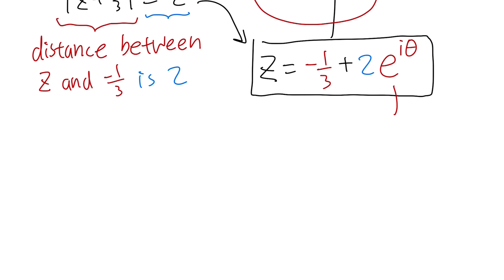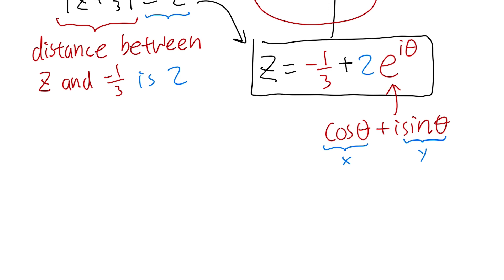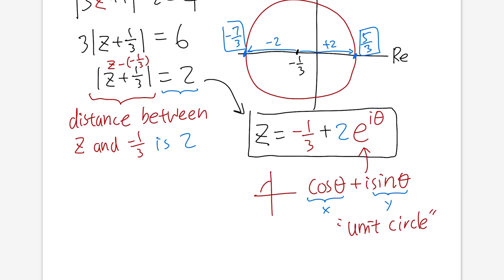Looking at the cosine part as x and the sine part as y, you realize we're just talking about the unit circle on the complex plane. Let me break the formula down: the e to the i·θ gives the unit circle; multiplying by 2 scales it so the radius becomes 2; then adding negative one-third shifts the circle one-third of a unit to the left. That's how we get our circle right here.